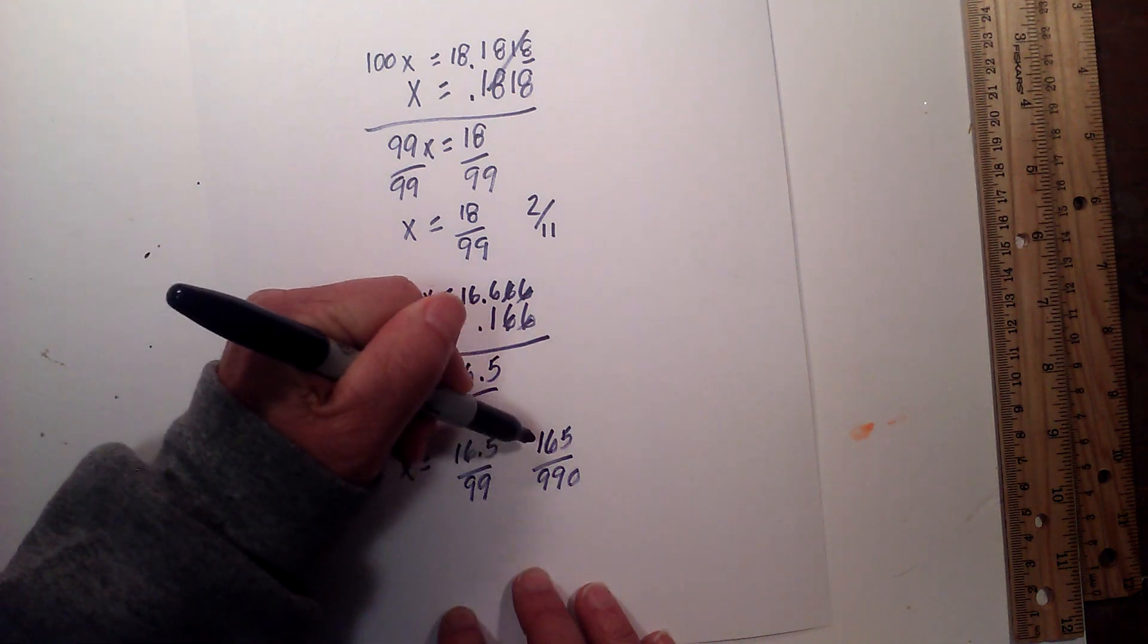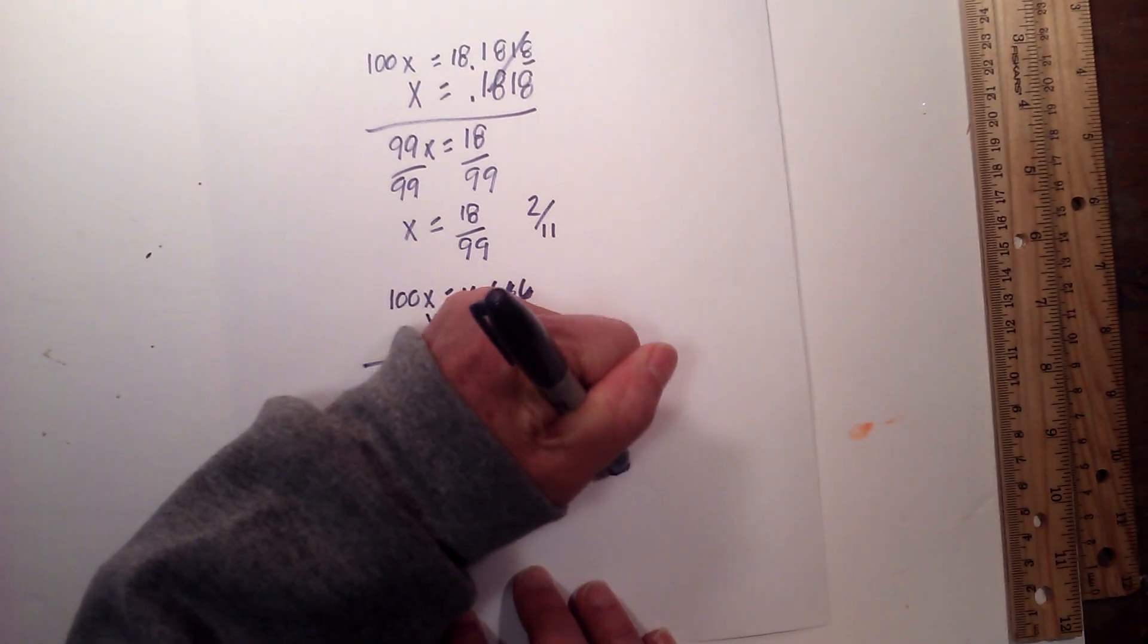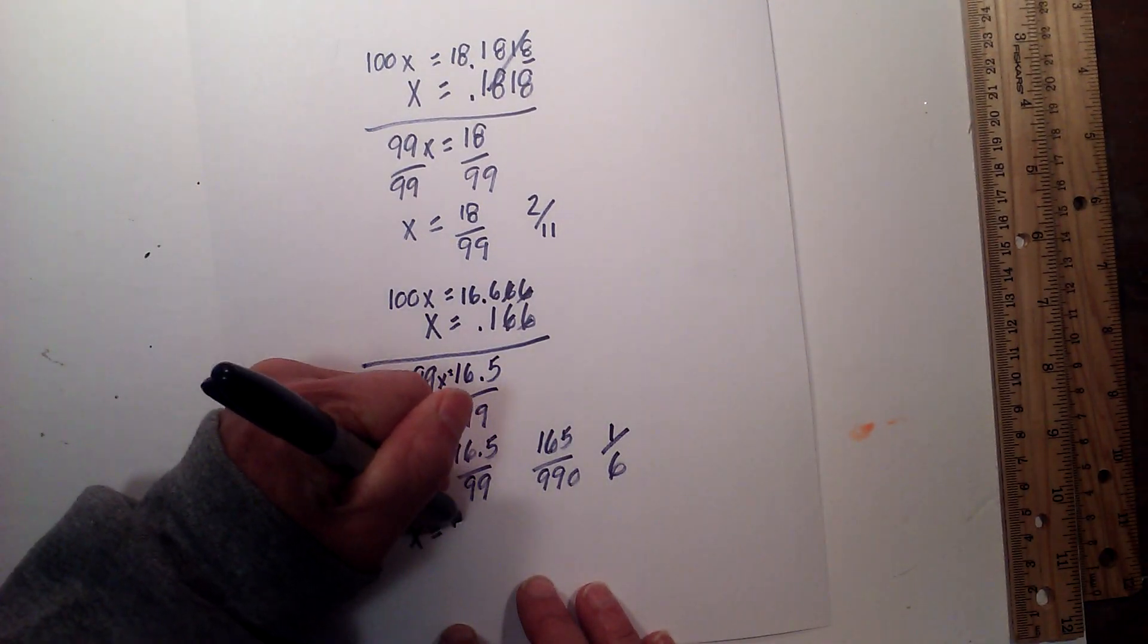And believe it or not, 165 will go into 990 six times. So it simplifies to 1/6. So x equals 1/6.